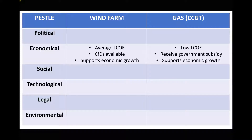The first factor to consider is economical — cost and income projections. Onshore wind farms have an average levelised cost of electricity: not the cheapest, but not the most expensive. Combined cycle gas turbines currently have a low levelised cost of electricity, making them cheaper to develop. For incentives, wind farms have contracts for difference available, while the gas plant also receives government subsidies. Both projects support economic growth, providing jobs and security of energy supply.